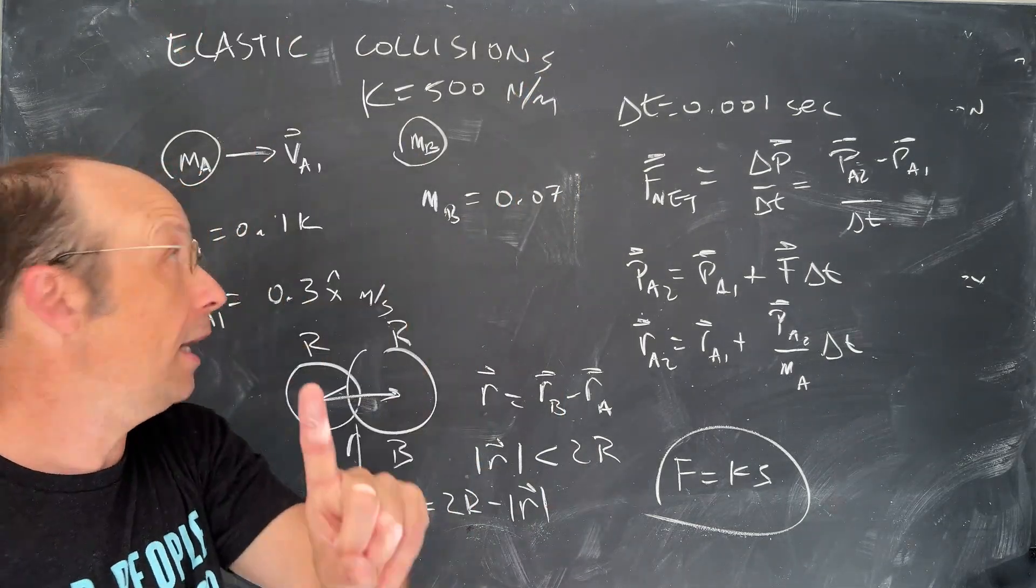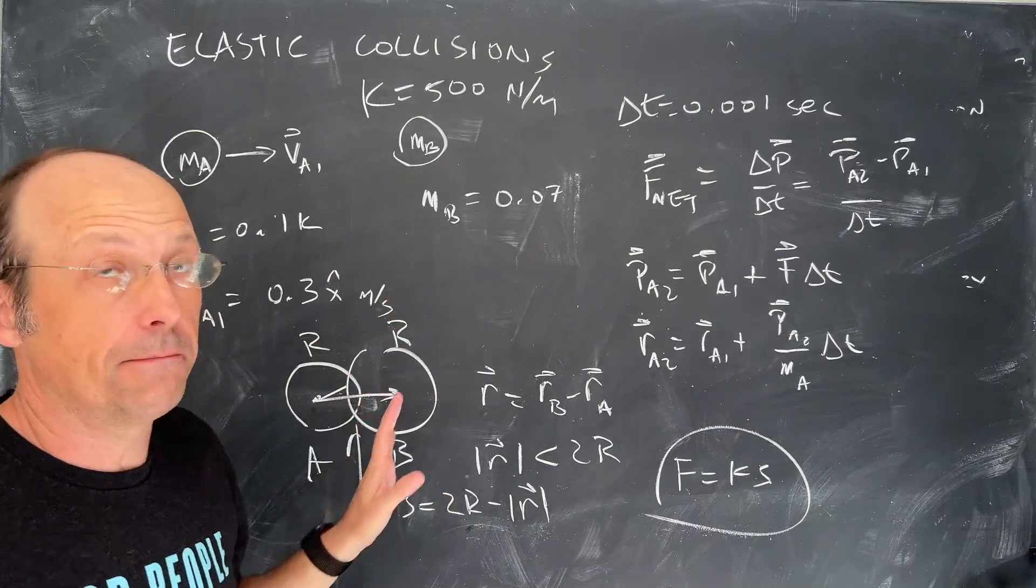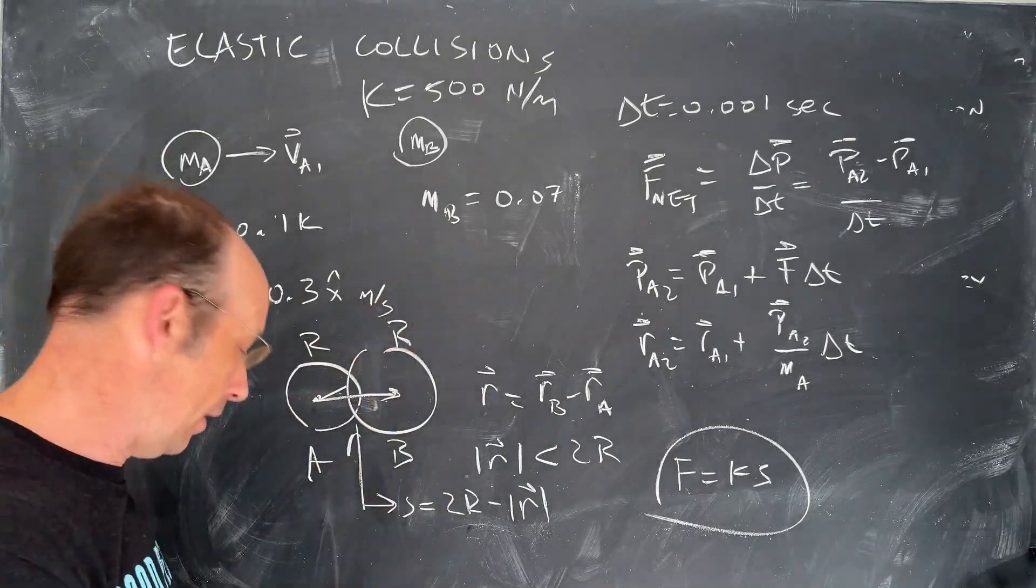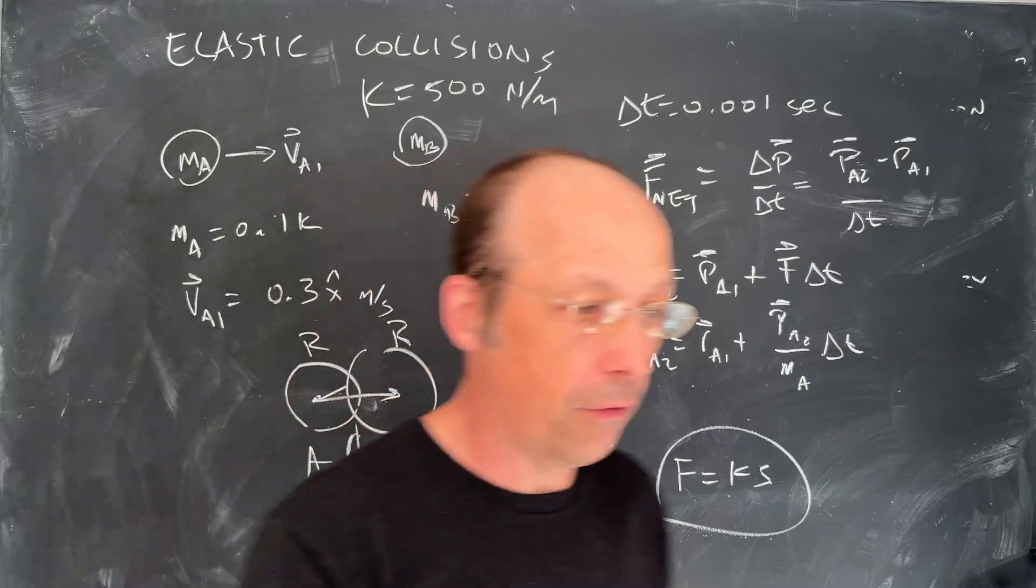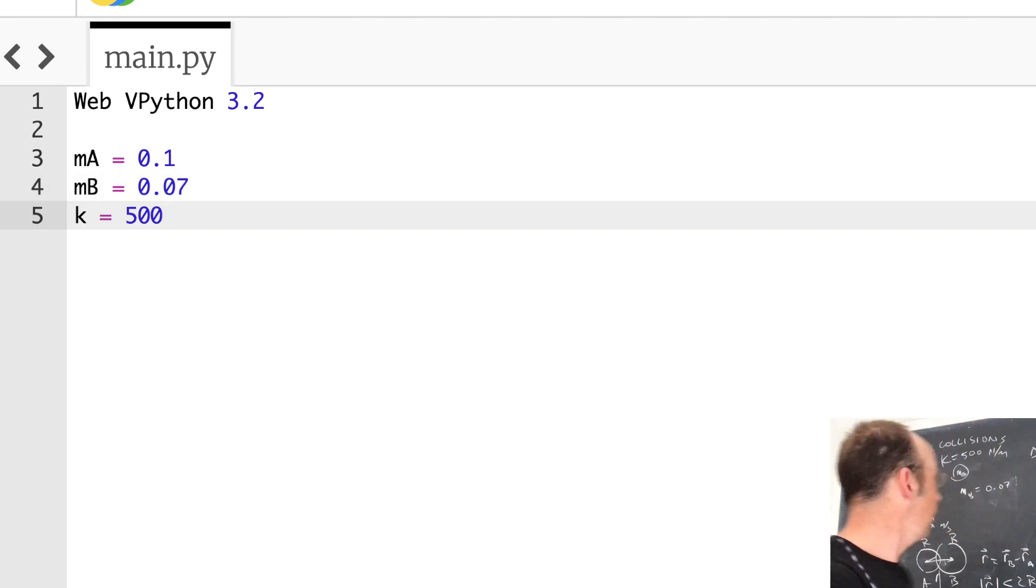We're going to break it into parts. Number one, I'm going to make two balls. I'm going to make them move. That's it. And then I'll add in the stuff about calculating the force. So let's jump over to Python and get started. Web VPython. I'm going to put in my masses here. So let's say M A is 0.1. M B is 0.07. K, the spring constant, I said was 500.